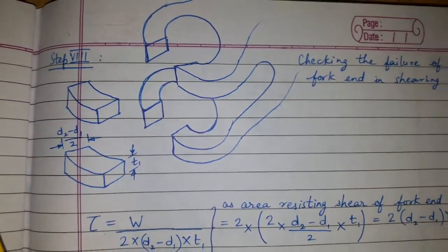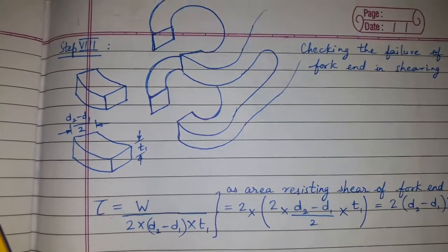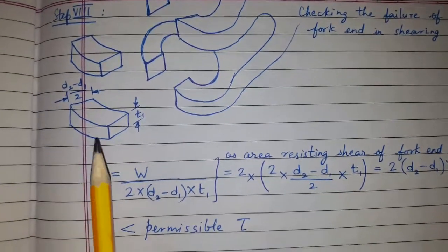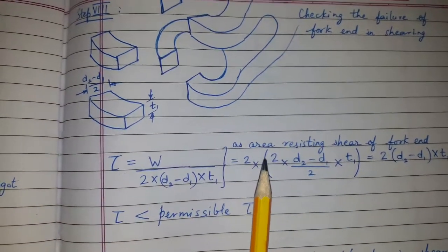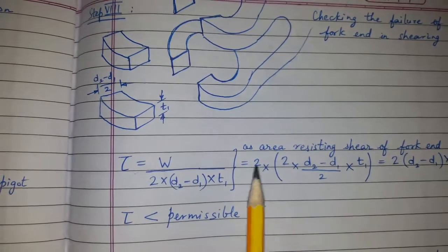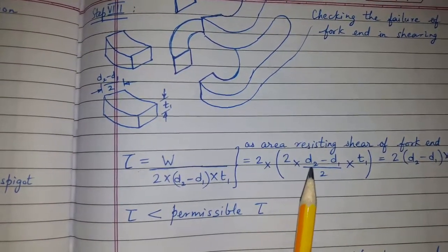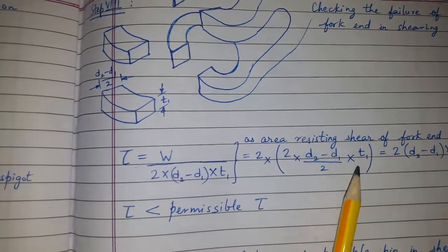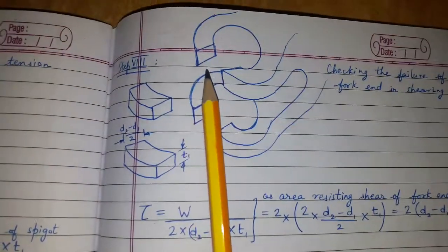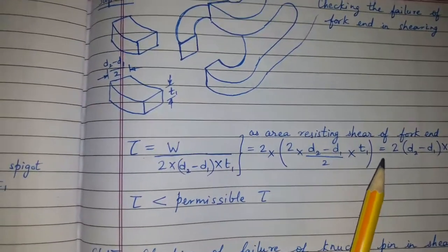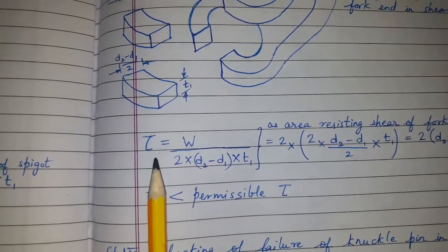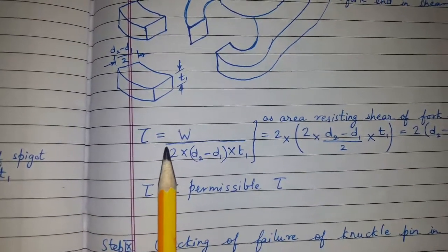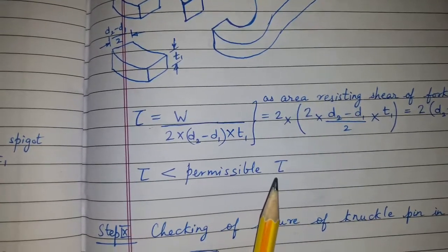Step 8: we have to check the failure of fork end in shearing. The area resisting the shear of the fork end is 2 × (d2 − d1)/2 × t1 — because it acts both up and down — giving 2 × (d2 − d1) × t1. We find the shear stress and check whether it is less than the permissible stress.